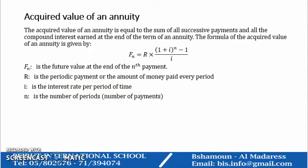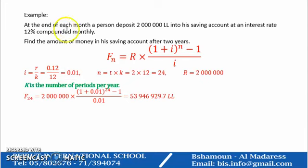Now we have an example here. At the end of each month, a person deposits 2 million Lebanese lira into his saving account at an interest rate 12% compounded monthly. We have here the annual interest rate, so I'm going to divide this by 12 to transform it from annual interest rate into monthly.